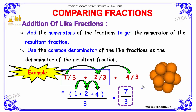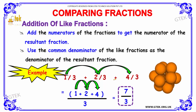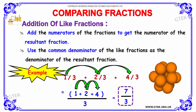We also have a third term, 4 divided by 3. So the numerators are 1, 2, and 4. The addition of the numerators gives the numerator of the resultant fraction. The next point is to use the common denominator of the like fractions as the denominator of the resultant fraction.